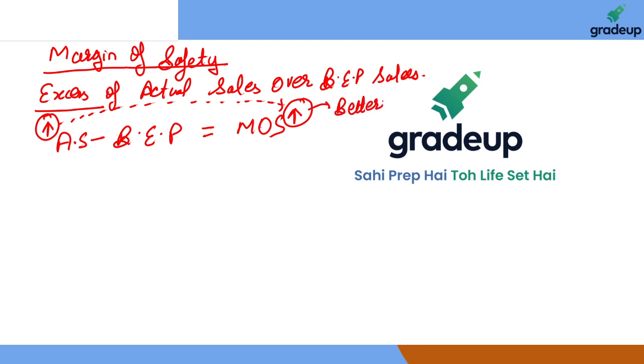If our actual sales are much higher than break-even point sales, higher the margin of safety, higher the chances of survival of the firm. That is better for the firm.